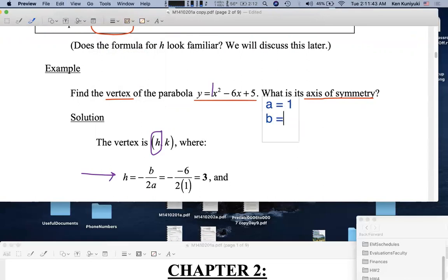B is, careful, b is what? B is negative 6. Watch your sign. Watch your sign. And by the way, c is 5. But this formula doesn't care.